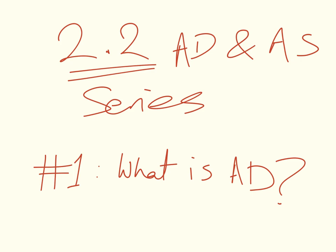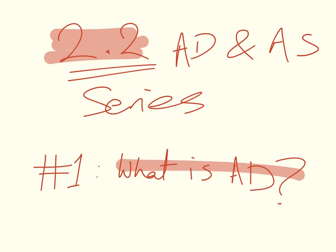This is the first video of the Aggregate Demand and Aggregate Supply series. It's going to be a rather long series because there's quite a lot of concepts to cover. This is Unit 2.2 of the IB Macroeconomic Syllabus. In this video, I'll basically introduce the concept of Aggregate Demand — what it is, what its components are, and how it is defined.